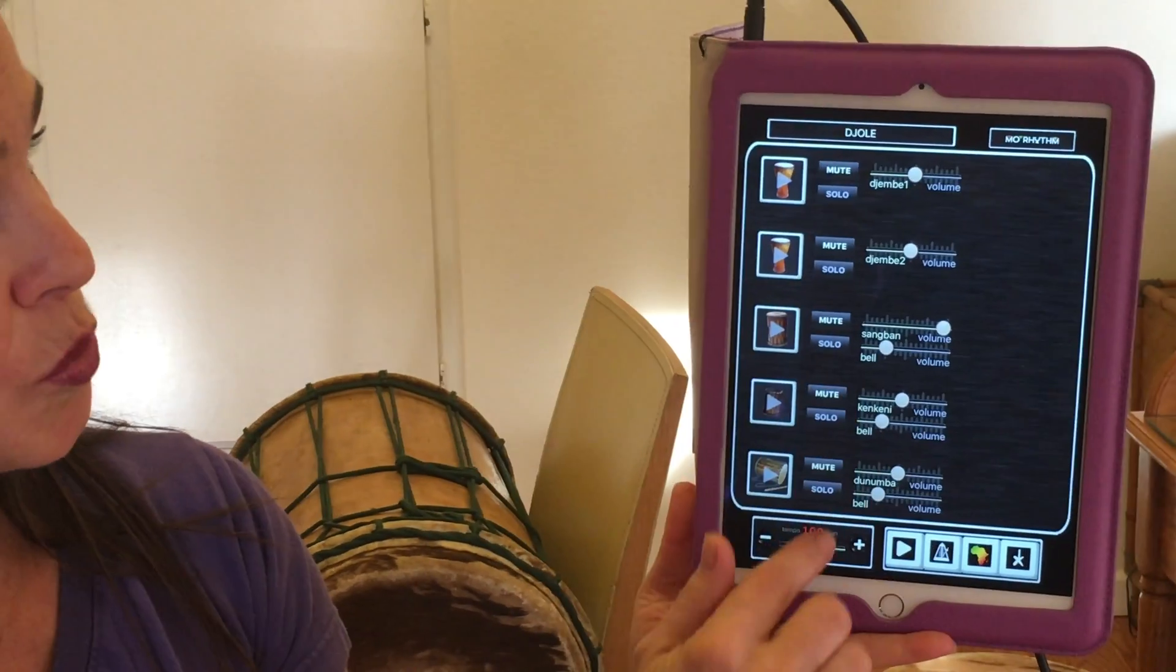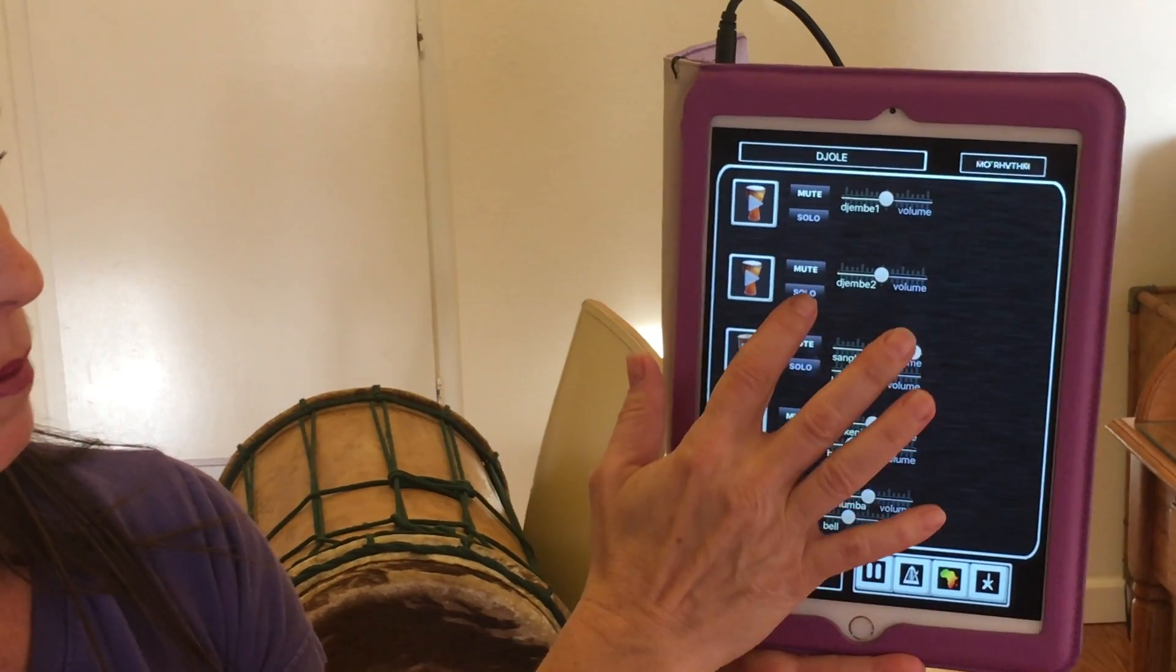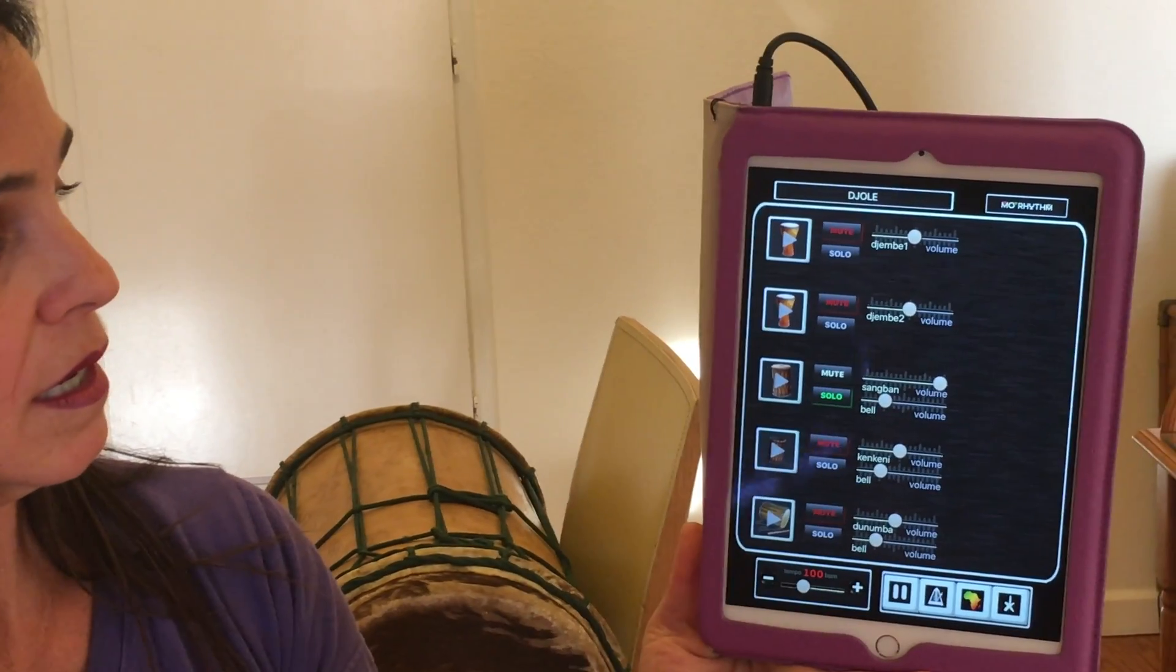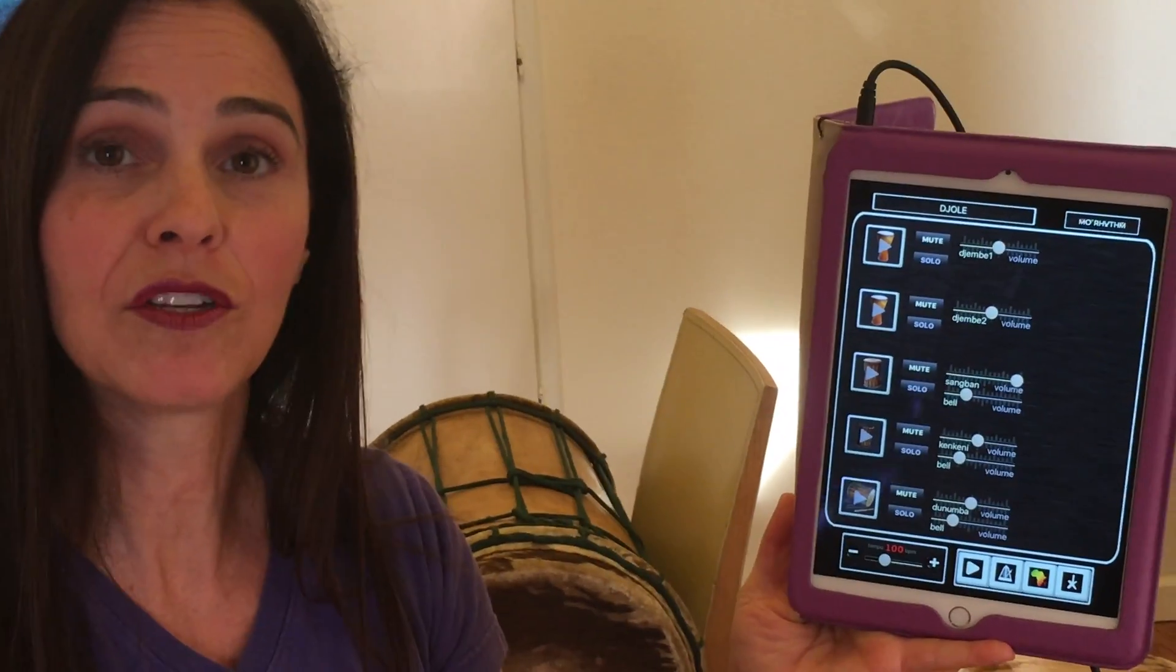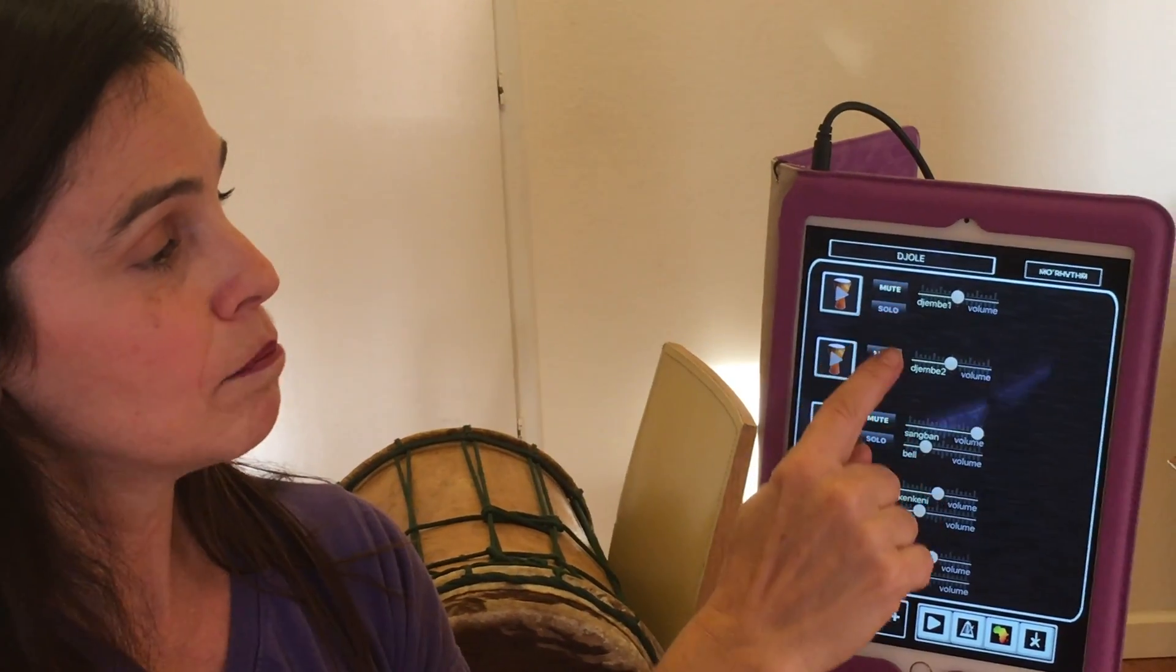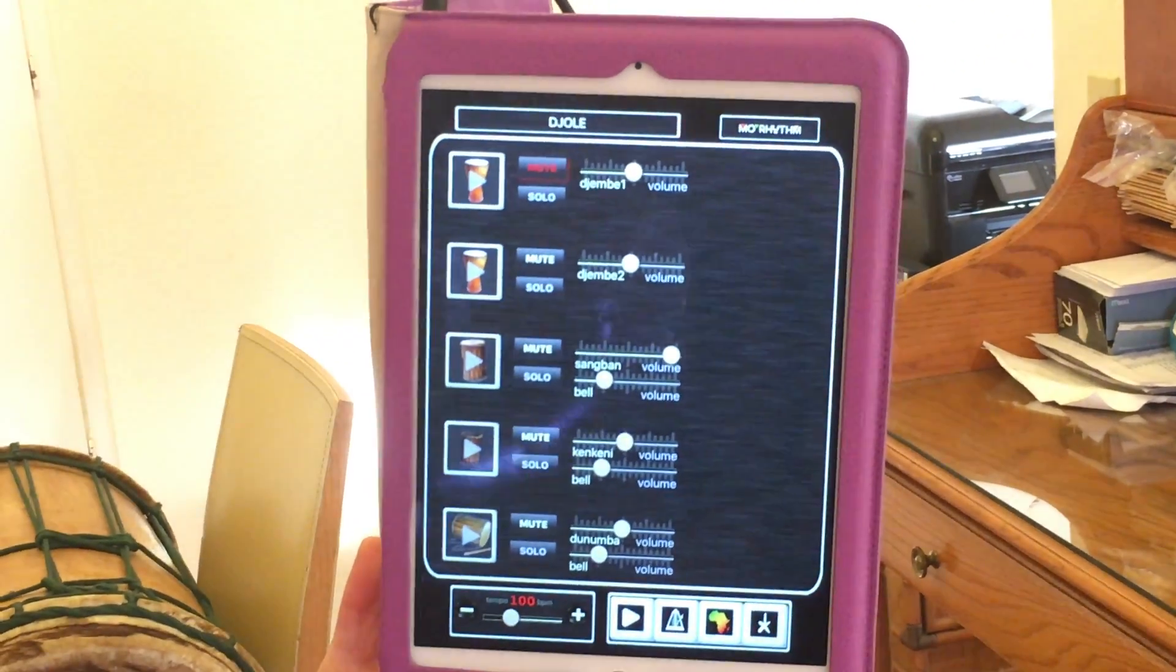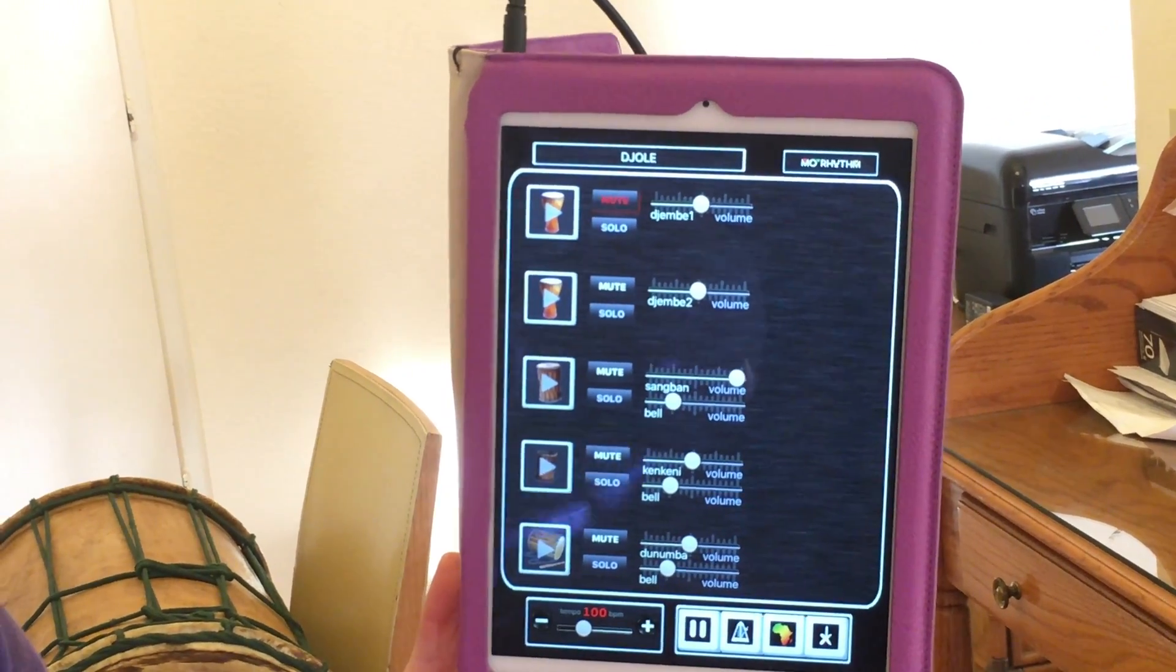So if you want to change what you're hearing, you can either do it while the track is playing. No problem. Or if you want to set up your practice session, you can say, okay, I want to play first accompaniment. So I'm going to mute that first accompaniment. Because I want to play along and see if I can stay in the rhythm. So the idea is that all of the other instruments are going to play, except for first accompaniment.